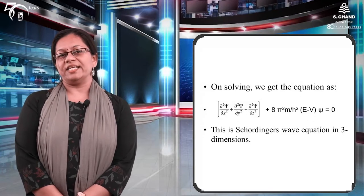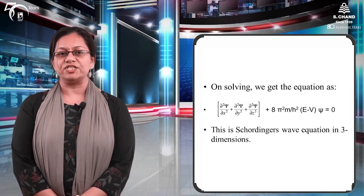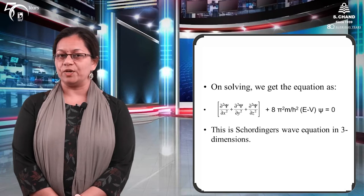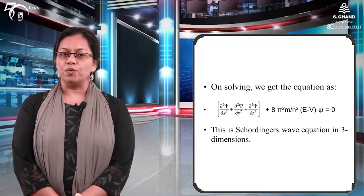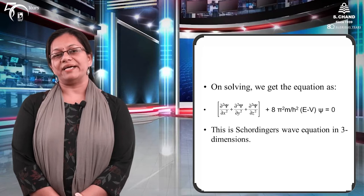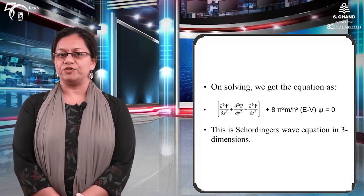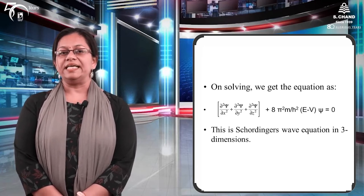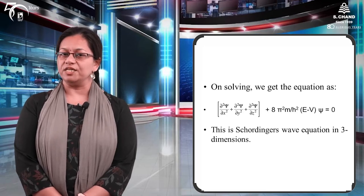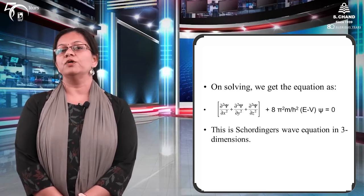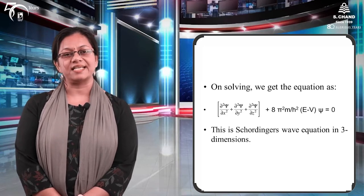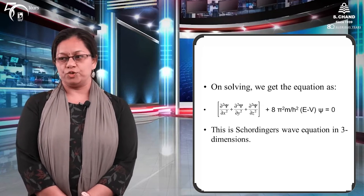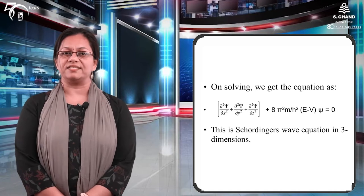Schrödinger ne is equation ko differentiation se solve kiya aur usne hame ek expression diya — the Schrödinger's wave equation for three-dimensional motion: ∂²χ/∂x² + ∂²χ/∂y² + ∂²χ/∂z² + (8π²m/h²)(E − V)χ = 0. Jahan E total energy hai, V potential energy hai, chi wave function hai, M is the mass of the electron, and H is Planck's constant.